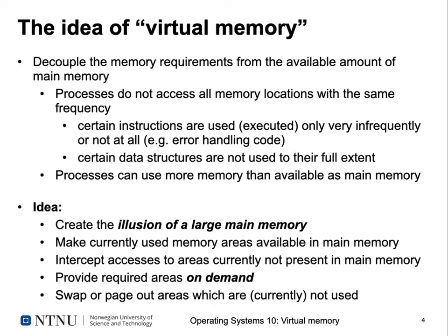The idea behind virtual memory is to create an illusion — the illusion that we have a very large main memory even if we couldn't afford that much physical RAM. We do this by keeping only the currently used memory areas in main memory. If a process attempts to access a page that's not currently present, we intercept that access, then provide the required memory areas on demand. If we run out of memory by loading additional information, we have to kick something else out — swapping or paging out memory areas currently not in use.